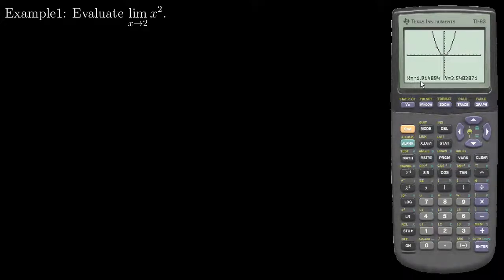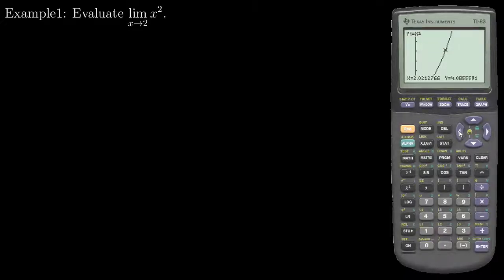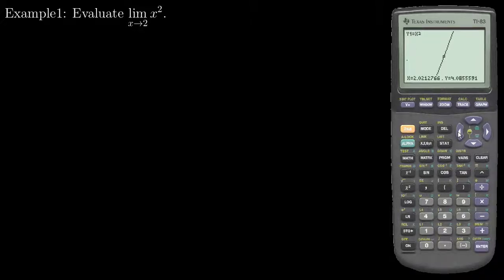I want to see what's happening around X equals positive 2. I can trace, and now when I move left and right I change X by far less. As I go to the right closer to X equals 2, the value goes from 3.46 to 3.66 to 3.87. Coming from the right it's getting smaller and smaller. I can continue zooming in until I see that as I get as close as I can to 2, the output gets very close to 4.